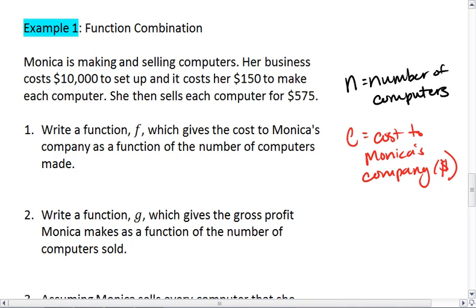Then we see that c equals f of n, and that the cost of Monica's company, it starts with a cost of $10,000, and it costs an additional $150 for every computer that she makes. So we get c, which equals f of n, equals 10,000 plus 150n.